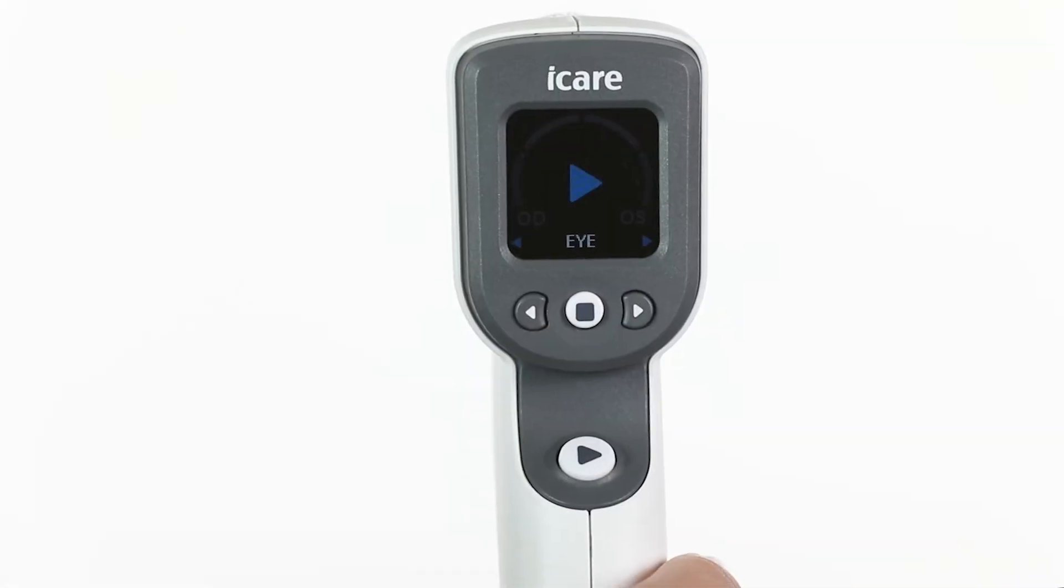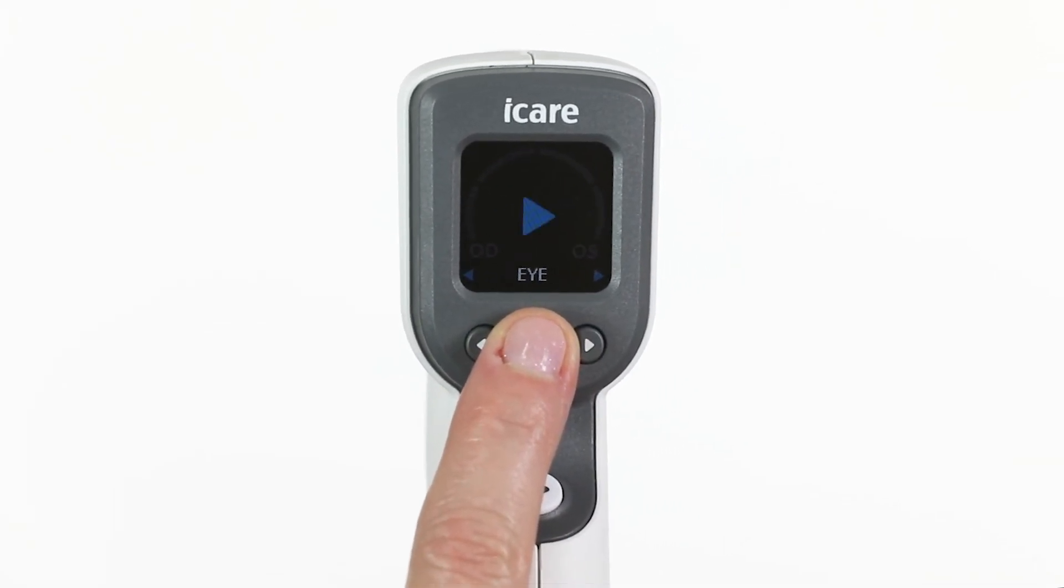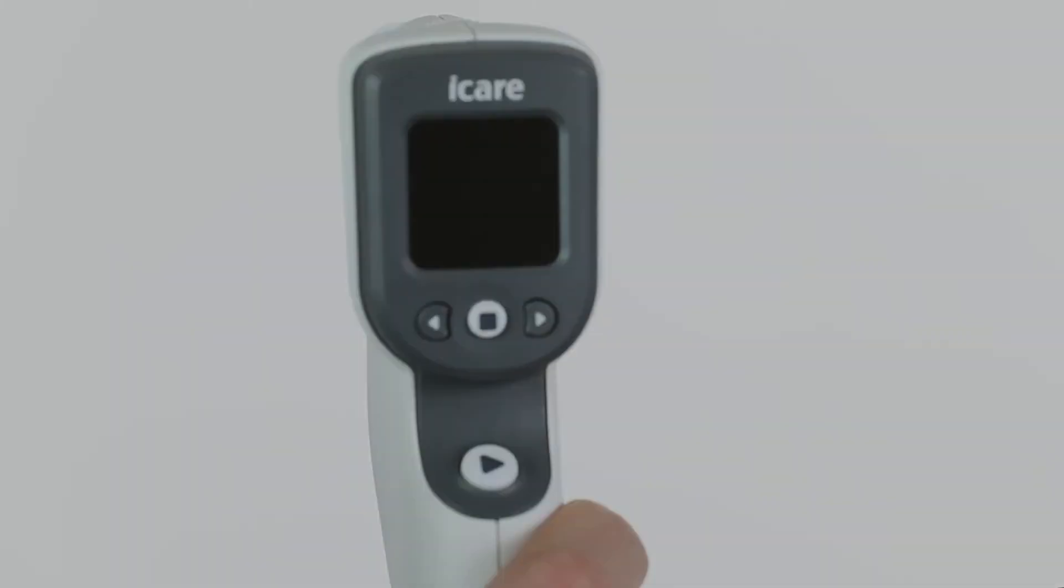When turning off the tonometer, press and hold the select button for 3 seconds, or the device will turn off automatically in 3 minutes if not used. Please refer to the manual for additional information.